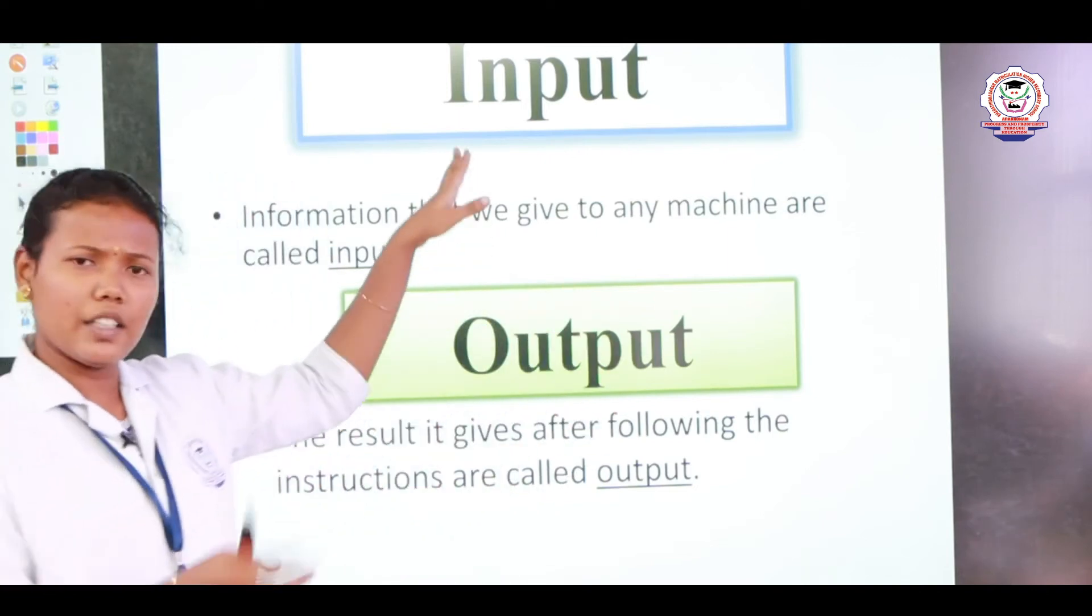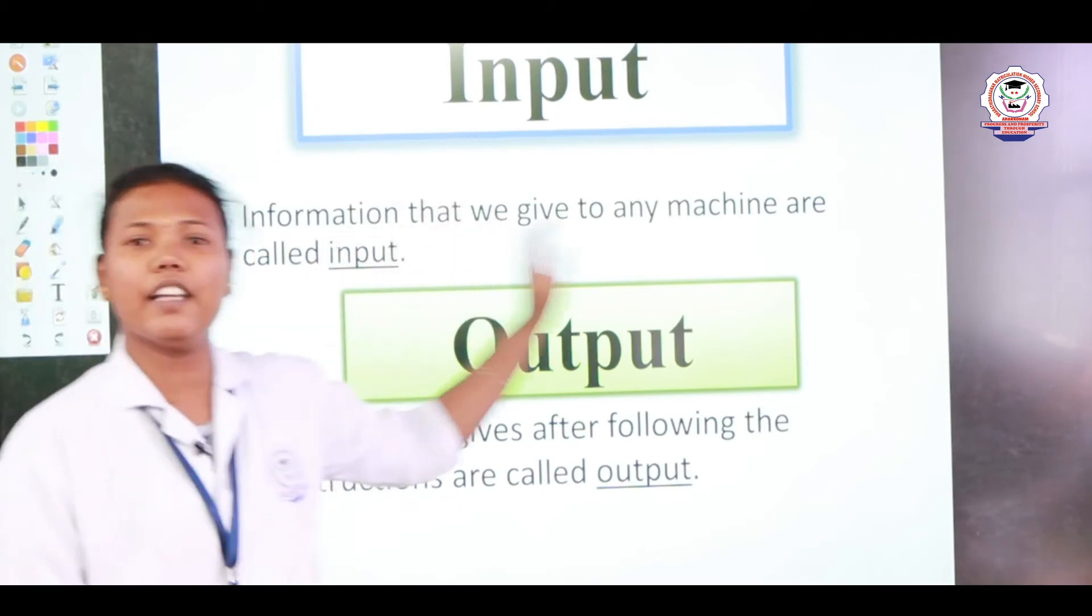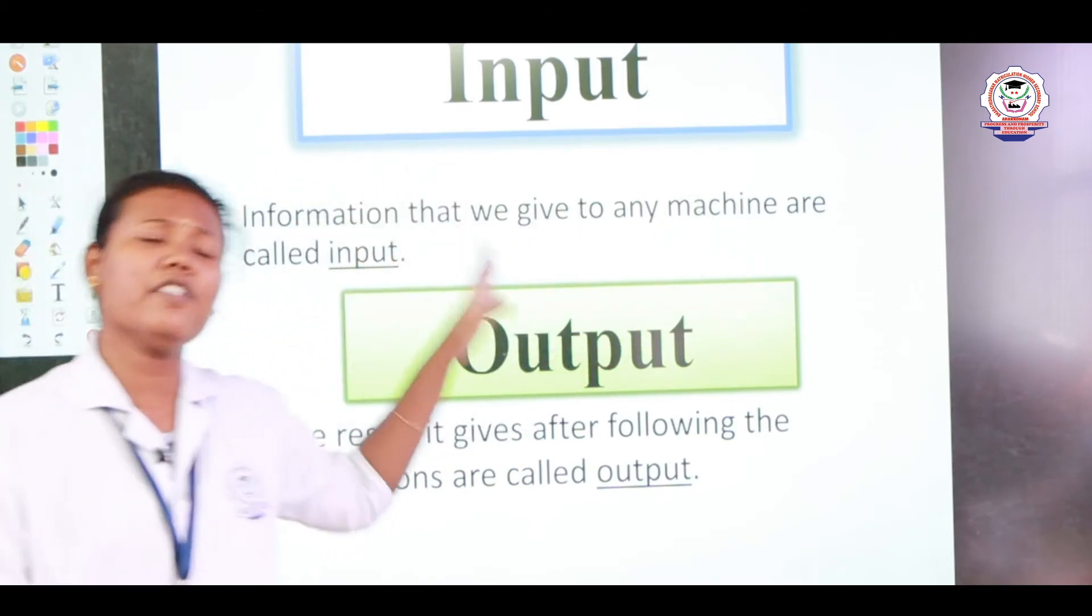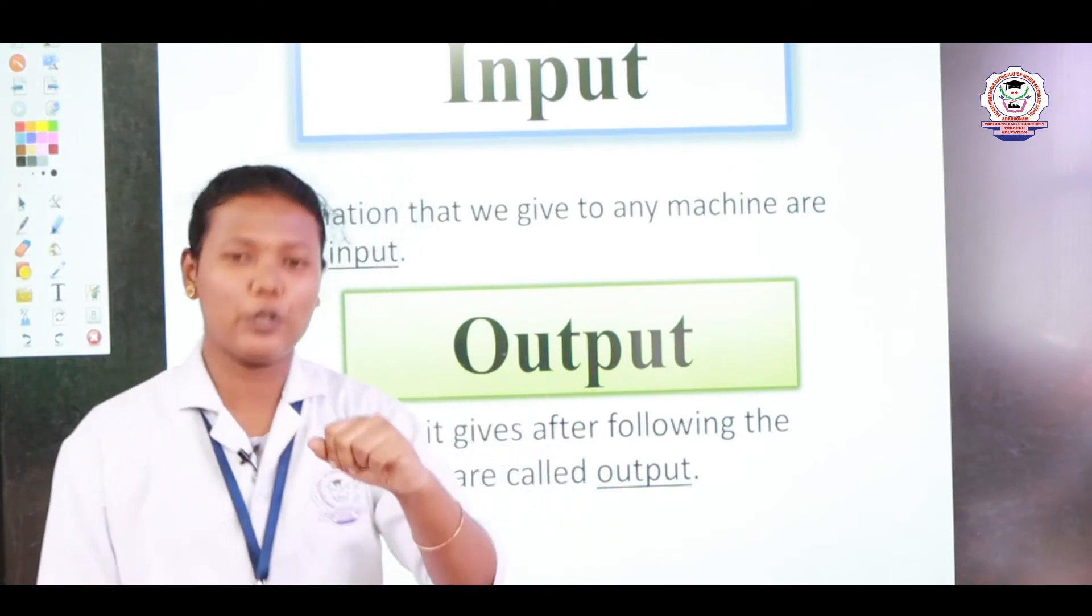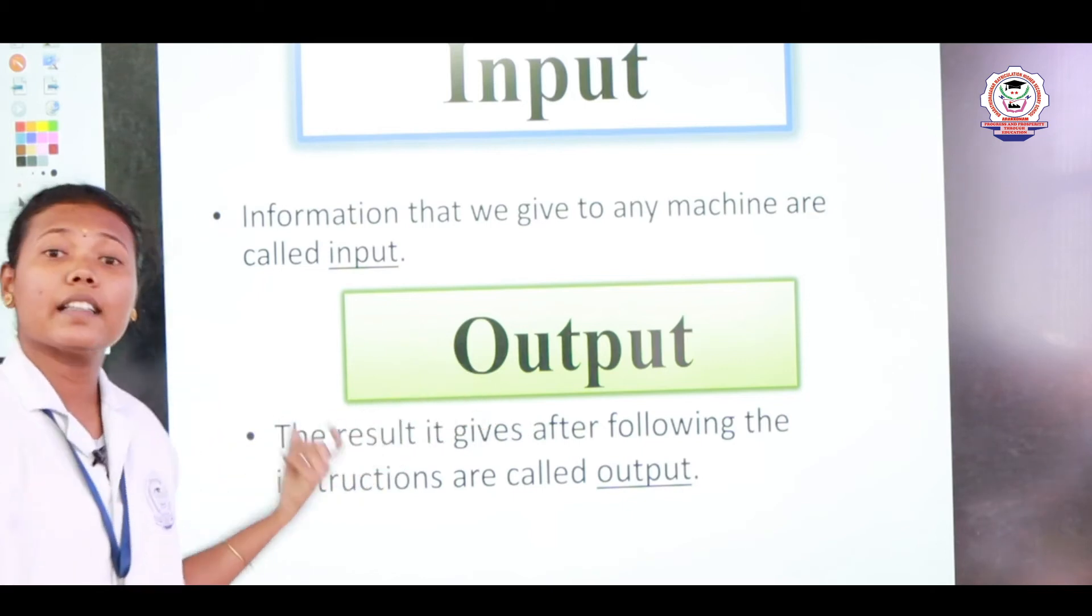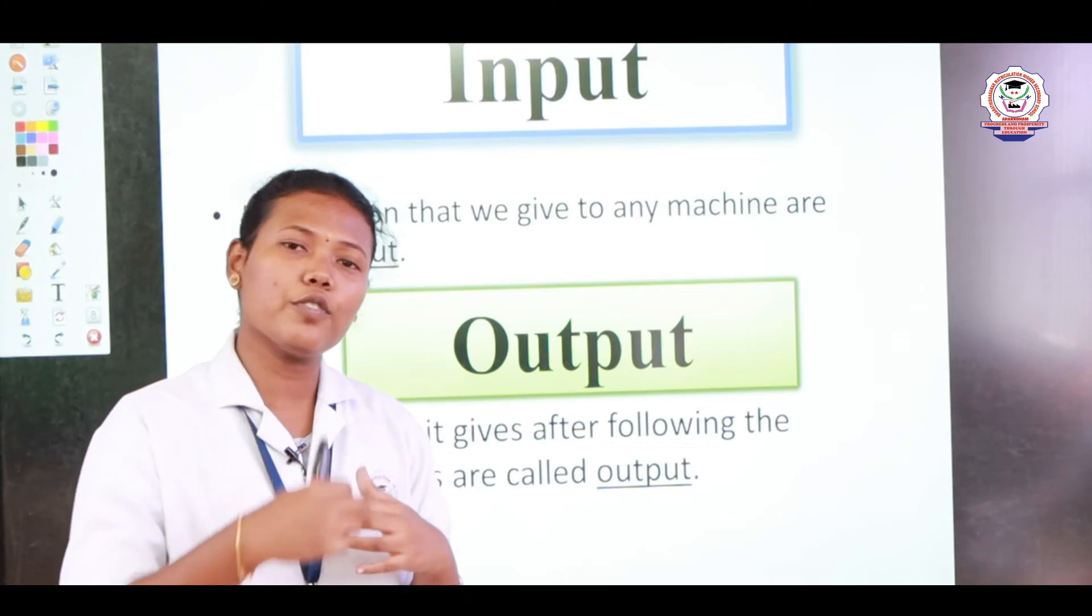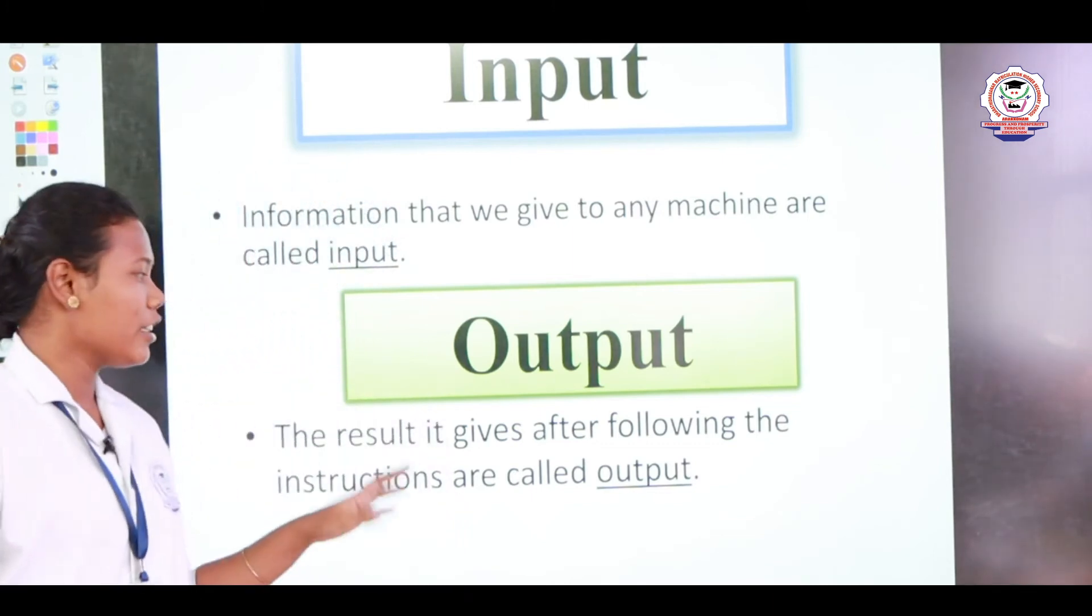So as I told you, what is the input? It is the information given to a machine. In the example I told, what is the information given to that machine, the juicer? Exactly, fruits. What will be the output? Output is nothing but the result of the machine. What is the result of the juicer? A fresh juice. Yes, exactly.